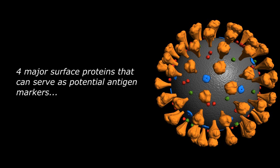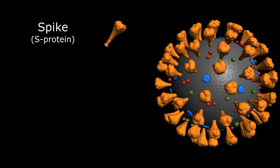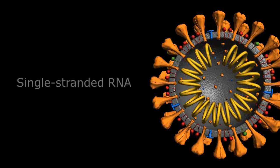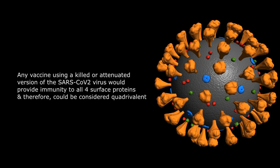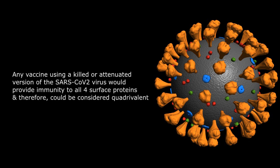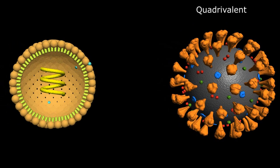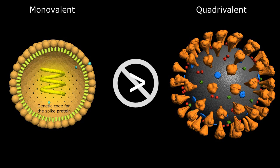There are four major structural proteins on the surface of the virus that can serve as potential identifiable antigens for our immune systems, including the spike or S-protein, nucleocapsid or N-protein, membrane or M-protein, and envelope or E-protein, all designed to house and protect the delicate genetic material in its hollow spherical core. Any vaccine using a killed or attenuated version of the SARS-CoV-2 virus would provide antibodies and immune memory to all four antigenic proteins and could be considered a quadrivalent therapy. On the other hand, the current generation of genetic vaccines only encode for the spike protein and are therefore monovalent. The idea that this monovalent therapy actually provides better immunity than exposure to the native virus is absolute nonsense and completely contrary to everything we know about viral infections and immunity.